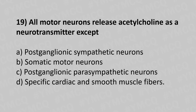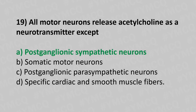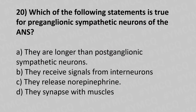Question 19: All motor neurons release acetylcholine as a neurotransmitter EXCEPT — Option A: postganglionic sympathetic neurons. Option B: somatic motor neurons. Option C: postganglionic parasympathetic neurons. Option D: specific cardiac and smooth muscle fibers. The answer is Option A — postganglionic sympathetic neurons.